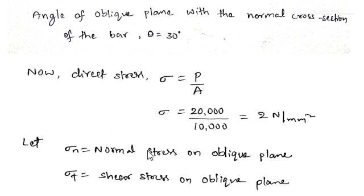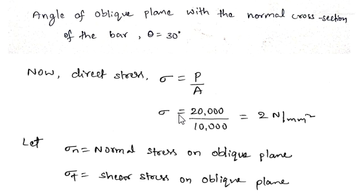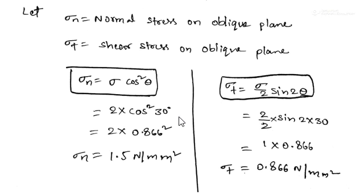Let sigma n be the normal stress on the oblique plane and sigma t the shear stress on this oblique plane. We have formulas for sigma n and sigma t. Sigma n is given by the formula sigma cos square theta, and sigma t, the shear stress, is given by the formula sigma by 2 sin 2 theta. For the derivation of these formulas, please refer to my previous video. This is the formula for normal stress and this is for shear stress on the oblique plane.